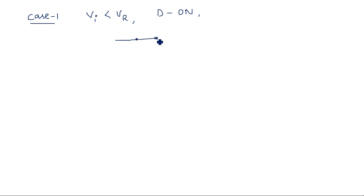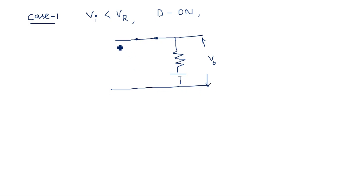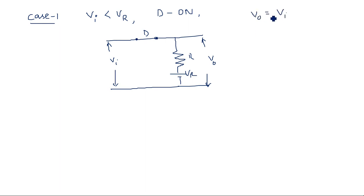When the diode is in on state, replace it with a short circuit. The circuit then has a resistor and reference voltage VR. Vi, VR, and V0 are all in the same parallel network, so output voltage equals input voltage. V0 is equal to Vi in this case.